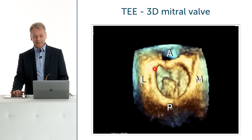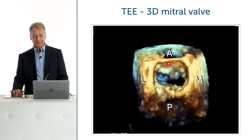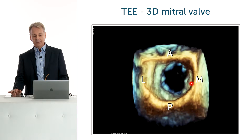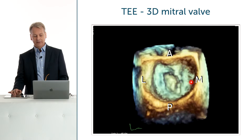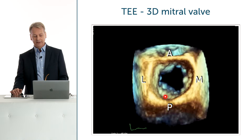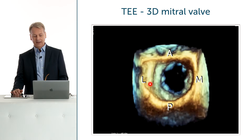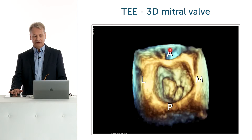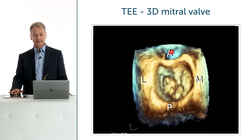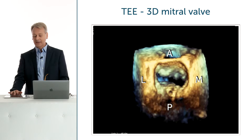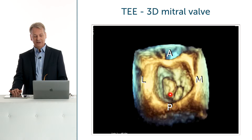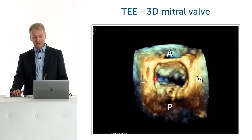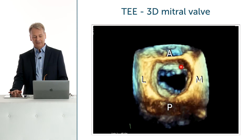The anterior leaflet should always be on top — this is A, the anterior leaflet. We then have the medial part of the valve, the posterior leaflet, and the lateral part. As a reference point, we have the aortic valve close to the anterior leaflet — that's how we can easily recognize it. We can also recognize it because the mitral valve has a kind of kidney shape, where the posterior leaflet is in this region and the anterior leaflet right here.